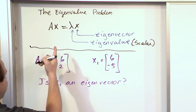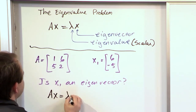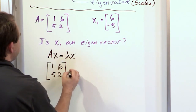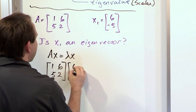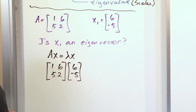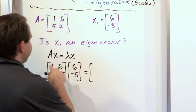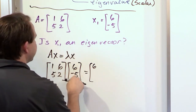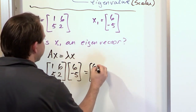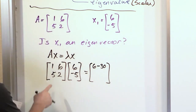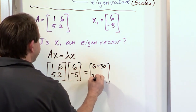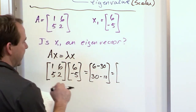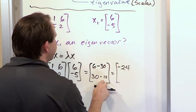The way you figure it out is you go back to your definition: Ax equals lambda x. So let's stick it in on the left-hand side. A is 1, 6, 5, 2, and the test vector — the potential eigenvector — is 6 and negative 5. Now we do the matrix arithmetic, going over and down. 1 times 6 is 6, 6 times negative 5 is negative 30. Then 5 times 6 is 30, and 2 times negative 5 is negative 10. So I get negative 24 on top and 20 on the bottom.